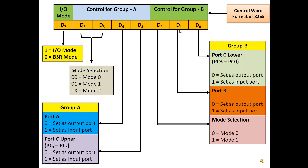Port B is controlled using D1. If 0 is set, Port B acts as output port; when it is 1, it acts as input port. The D2 bit is reserved for mode selection: if it is 0, mode 0 is selected for Group B, and if it is 1, mode 1 is selected for Group B.